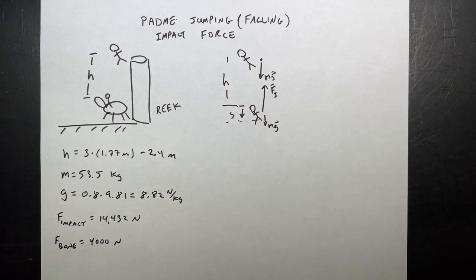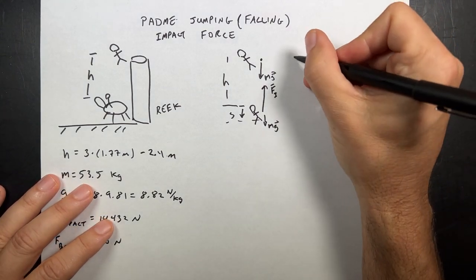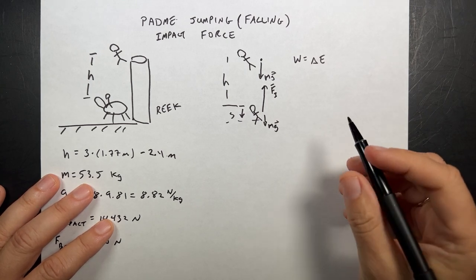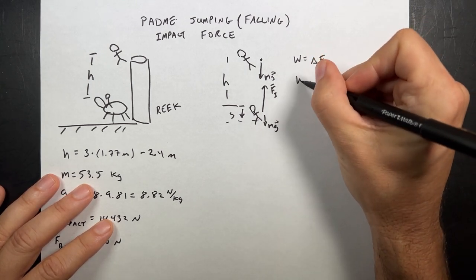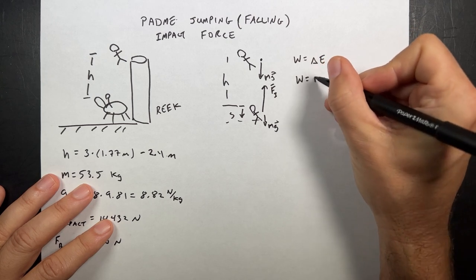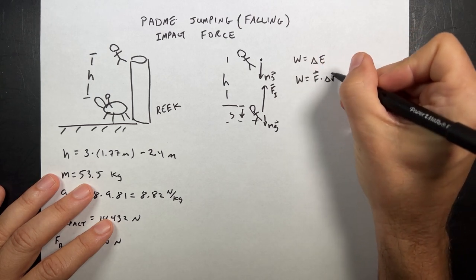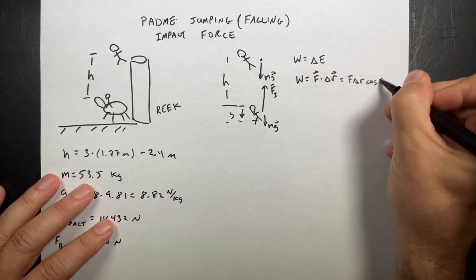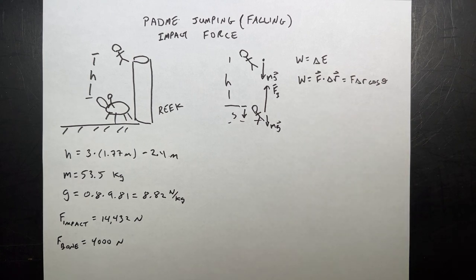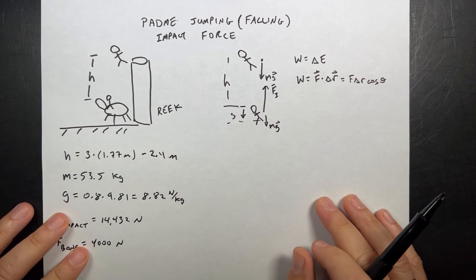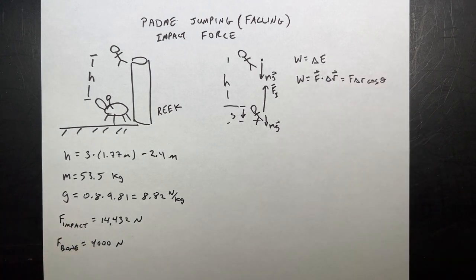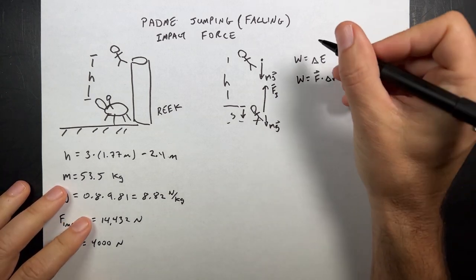Got it? So work energy principle says that the work is equal to the change in energy. And I know that seems silly, but that's what it says. It also says that the work done by a force is the force dot the displacement, where that's the dot product. And if you want to write this as F delta R cosine theta, a lot of books just do that because they don't want to talk about dot products. I'm cool with it either way.